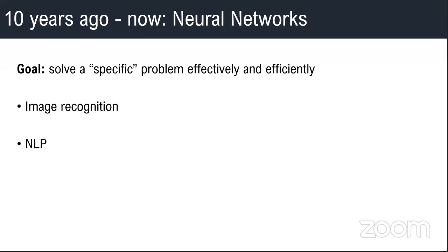You have image recognition, NLP, reinforcement learning. Why do I say it is specific? Because if you have a network that is great for image classification, you can't expect it to guarantee the same accuracy when you use it for NLP. The network you train for image recognition works best only on images — you cannot transfer it to NLP. Similarly, a network built for NLP can only be used for NLP.